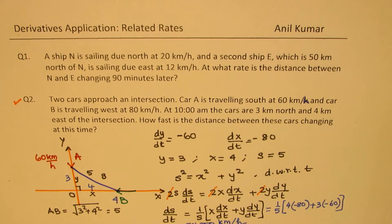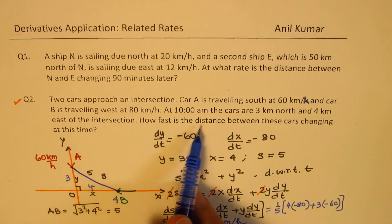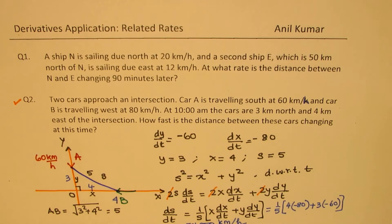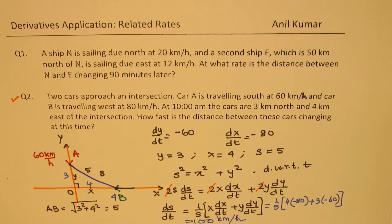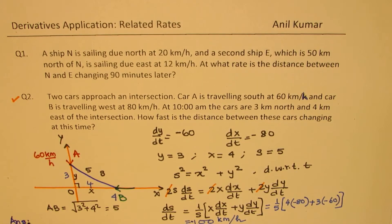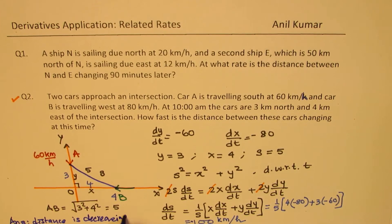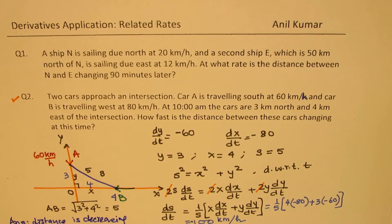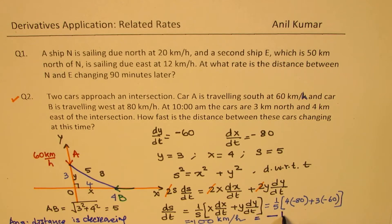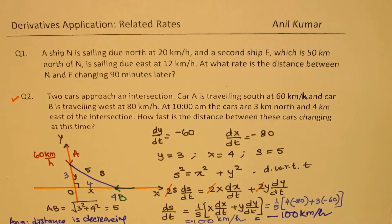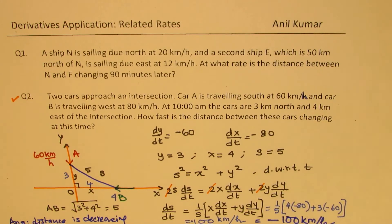So the distance is decreasing at the rate of 100 kilometers per hour. When we write 'decreasing,' we don't need the negative sign, but if we write dS/dt as the rate of change, we write it as negative. A negative sign in such situations indicates that the separation is decreasing. With this in mind, let's move on and do question number one.